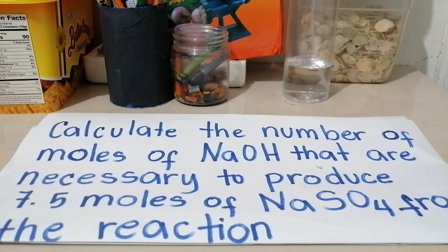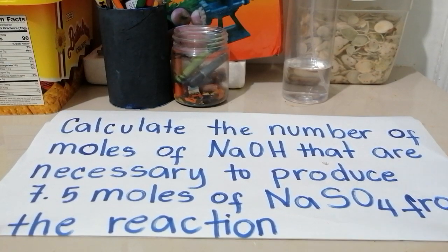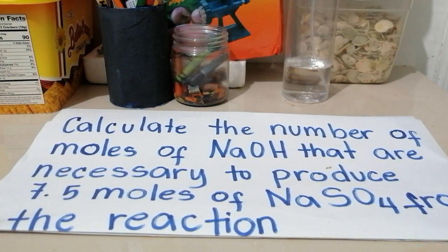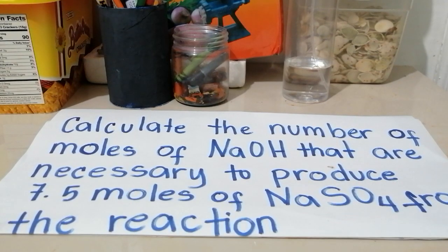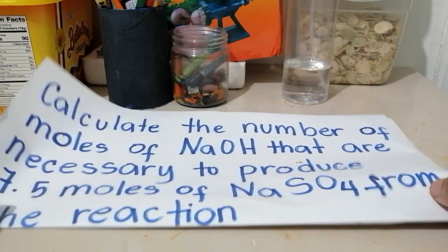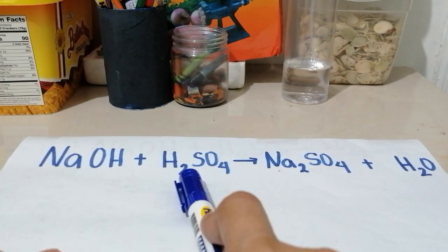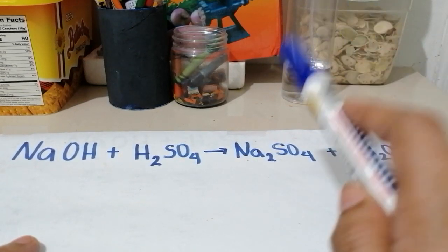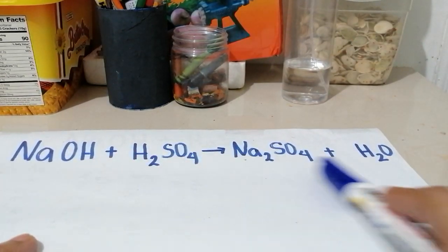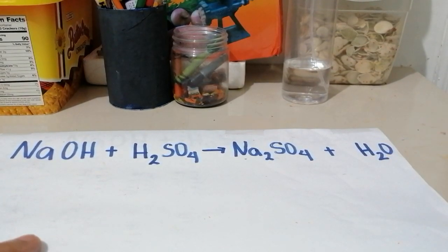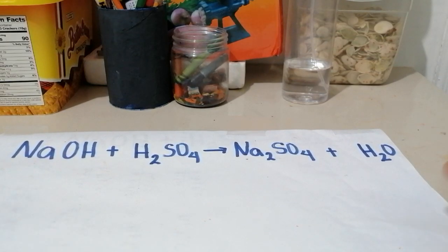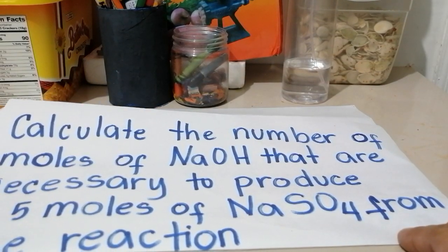In order for you to understand it further, let's take a look at this example. Calculate the number of moles of sodium hydroxide that are necessary to produce 7.5 moles of sodium sulfate from the reaction. The reaction is: sodium hydroxide plus sulfuric acid, when combined, form a product of sodium sulfate and water. This is a double displacement reaction.